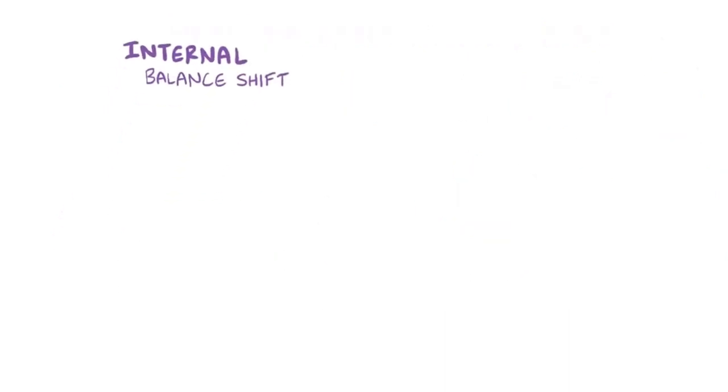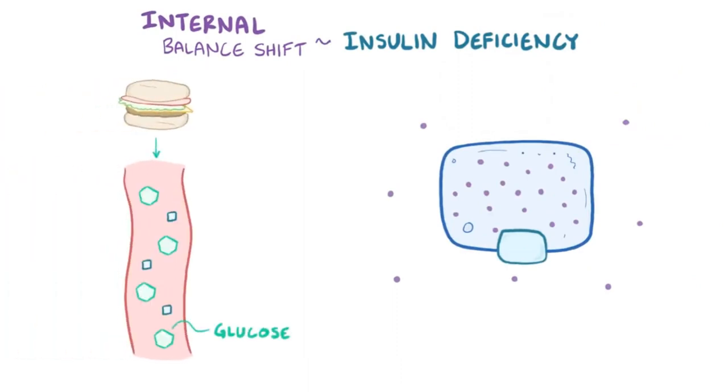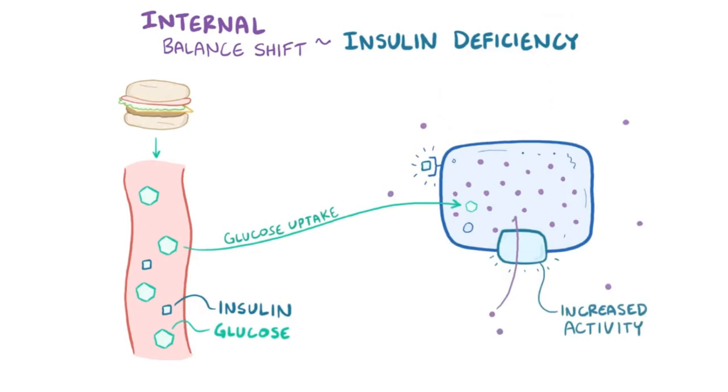One potential cause of an internal potassium balance shift is insulin deficiency. This is because after a meal, glucose increases in the blood, and at the same time insulin is released, which binds the cells and stimulates the uptake of that glucose. Insulin also increases the activity of the sodium-potassium pump, which pulls potassium into cells.